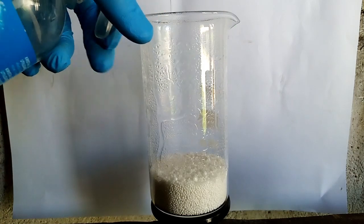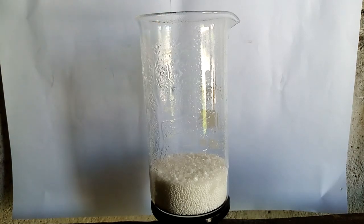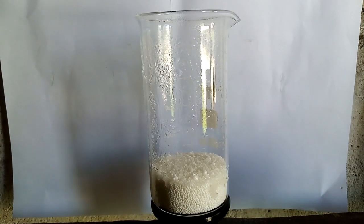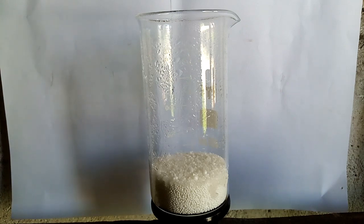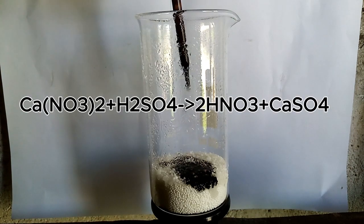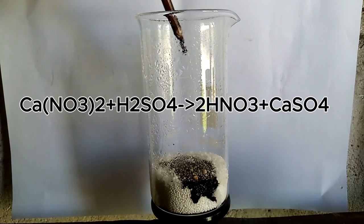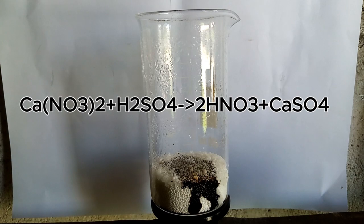After I spray out some water on the calcium nitrate, it's time to start the reaction and add the sulfuric acid. What is happening in the reaction? The calcium nitrate reacts with the sulfuric acid and forms nitric acid and insoluble calcium sulfate.